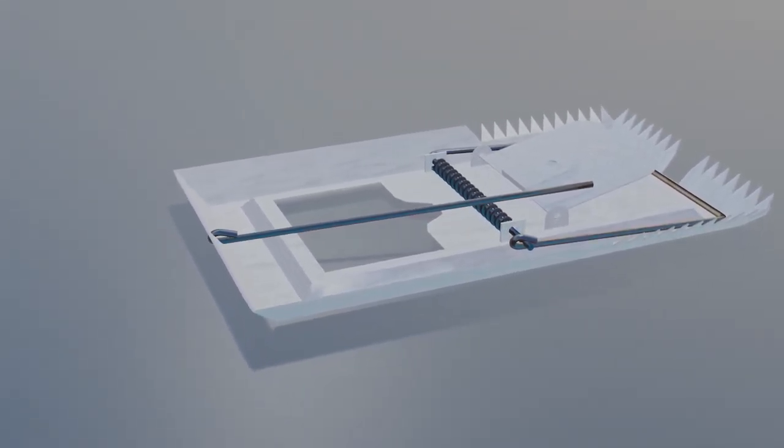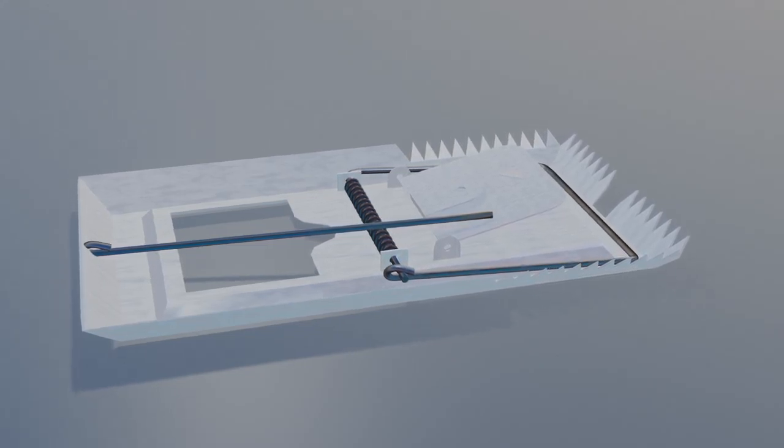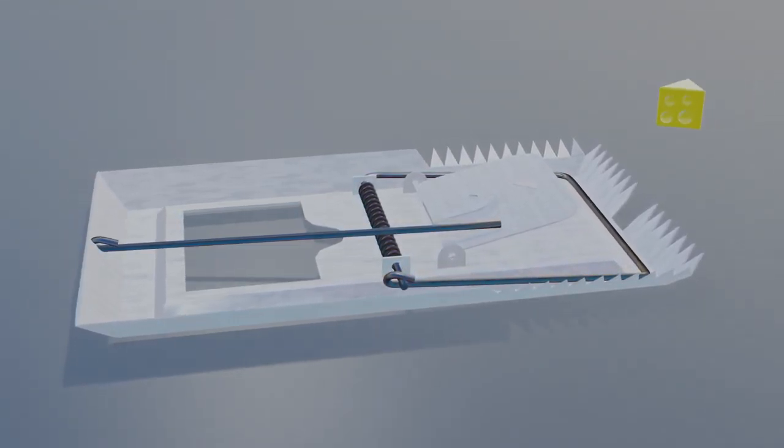Let's see how all these parts work together by arming the mousetrap. First, let's place some cheese on the catch to attract the mouse.